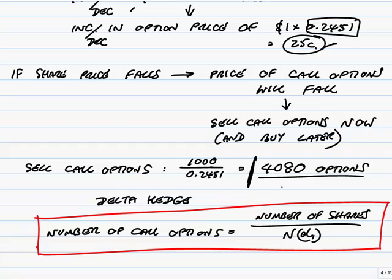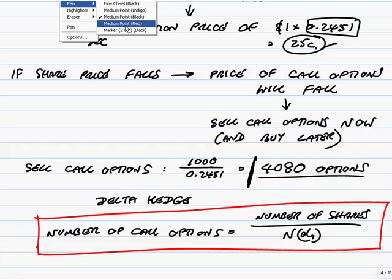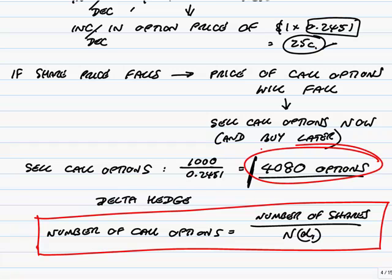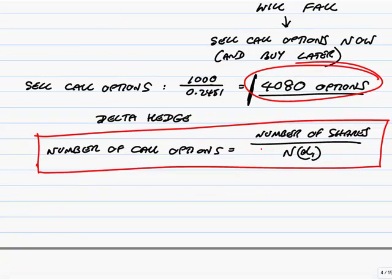The option dealer will do this, but effectively the other way around. The option dealer, if he's at risk on 4,080 options, what he'll do is buy 1,000 shares. And then he's protected. Share price goes up, the risk is people exercise their options, dealer loses money. Share price goes up, dealer owns some shares, dealer makes the compensating profit. That's a delta hedge.